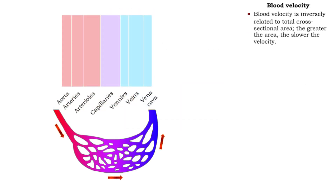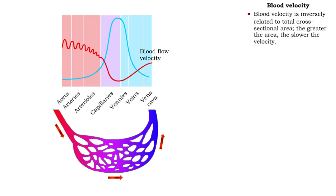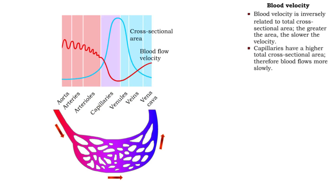Blood moves through vessels at a rate that is inversely related to total cross-sectional area. For example, capillaries, when all of them are added together, have a higher cross-sectional area than arteries and veins. Therefore, blood flows more slowly through capillaries. Slower blood velocity in the capillaries allows more time for the exchange of materials.